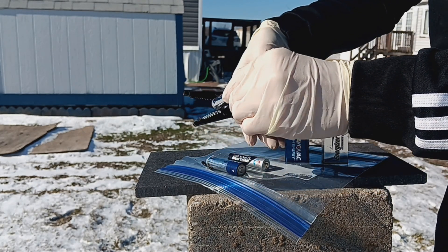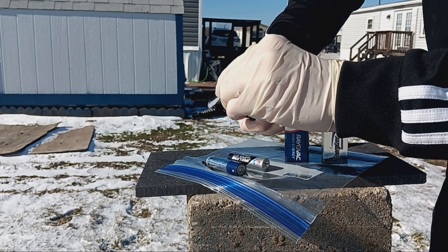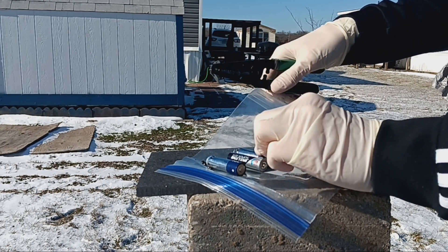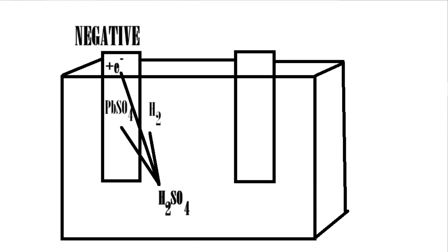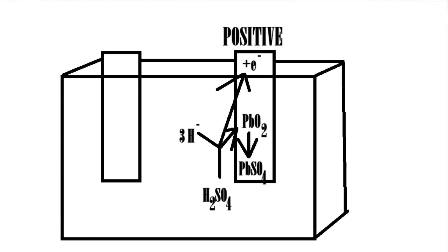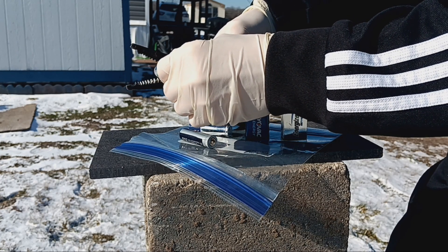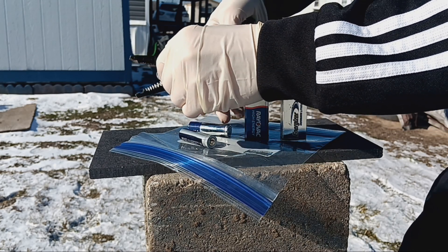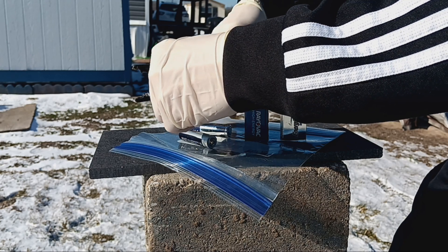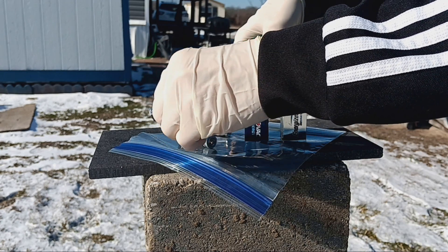The lead-acid battery is the perfect example of a system that can recharge, as by reversing the charge you can restore the battery to being able to discharge. At the negative plate, lead reacts with the sulfuric acid, creating lead sulfate and hydrogen. While at the positive plate, lead oxide reacts with the sulfuric acid and three hydrogen ions, forming lead sulfate and H2O. Total conversion of the plates can be reversed by applying a current into the system, allowing you to restore the battery's charge. This same principle is used in many other rechargeable batteries.